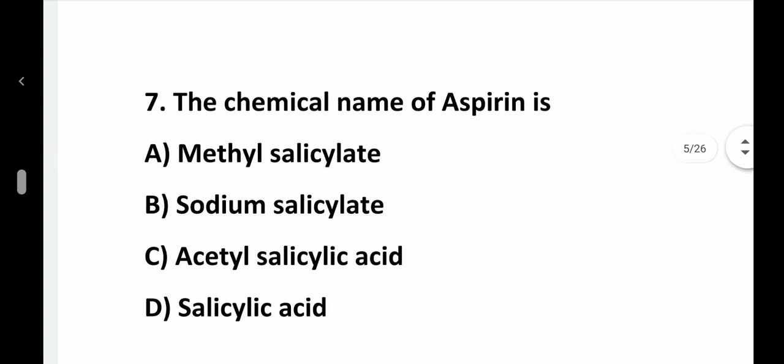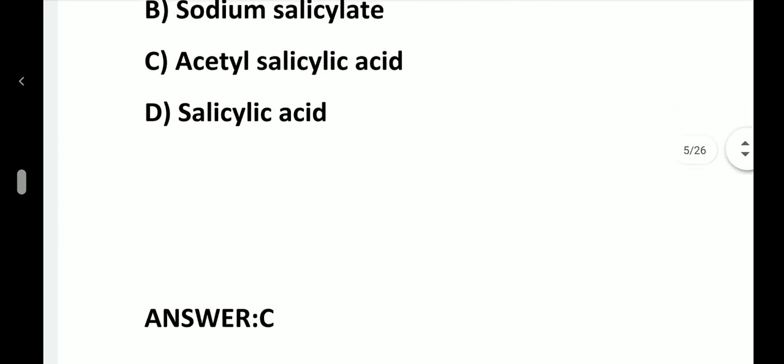Question number 7. The chemical name for aspirin is: option A, Methyl salicylate; option B, Sodium salicylate; option C, Acetyl salicylic acid; option D, Salicylic acid. Answer is option C, Acetyl salicylic acid.